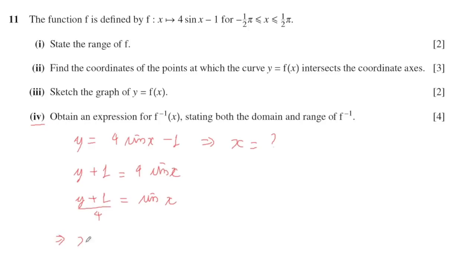The first step is to make sin(x) standalone: sin(x) = (y + 1)/4. From here, x = arcsin((y + 1)/4). After that, it's quite easy. You can write the inverse function as f^(-1)(x) = arcsin((x + 1)/4).